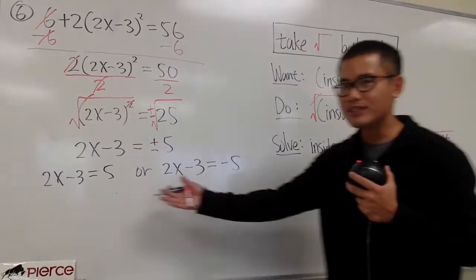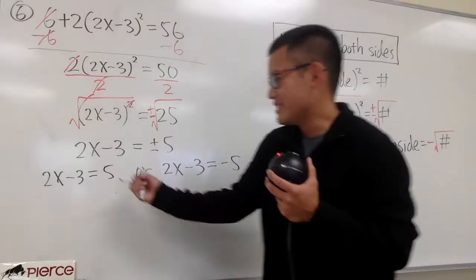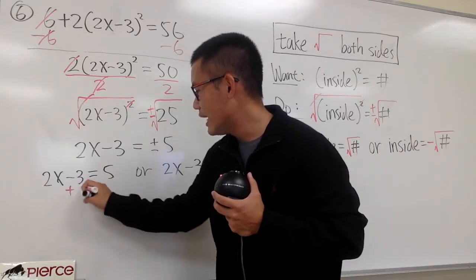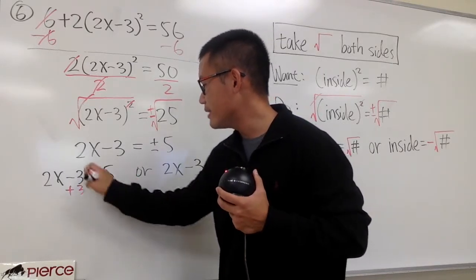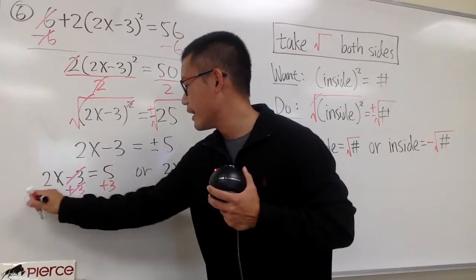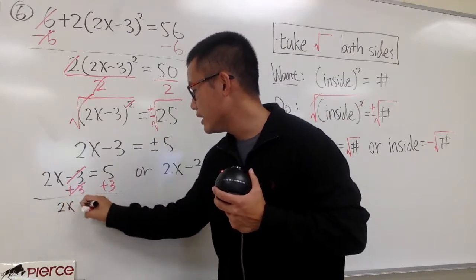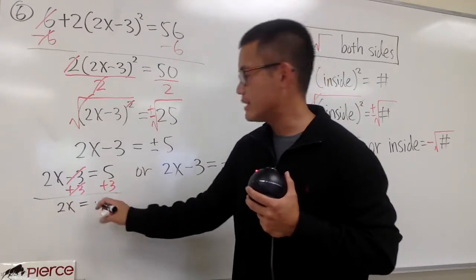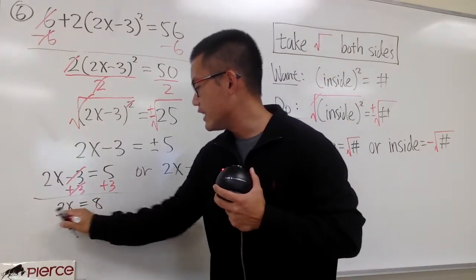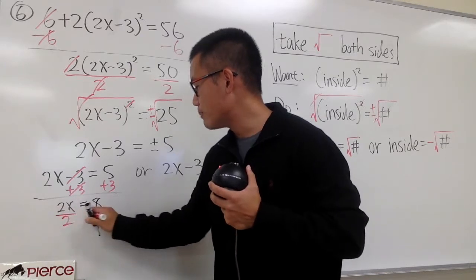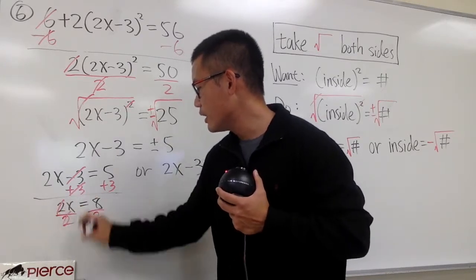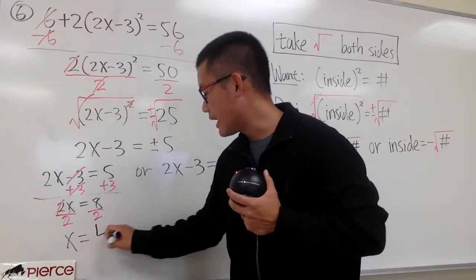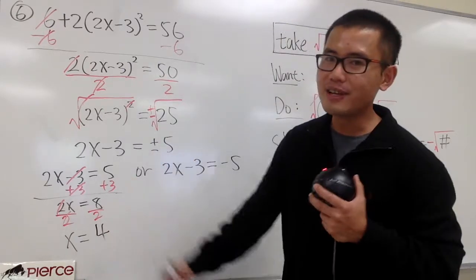We have to solve these two equations now. For the first one, we add 3 on both sides, so 2x equals 5 plus 3, that's 8. Then we divide by 2 on both sides — cancel, cancel — and x equals positive 4. That's the first answer.